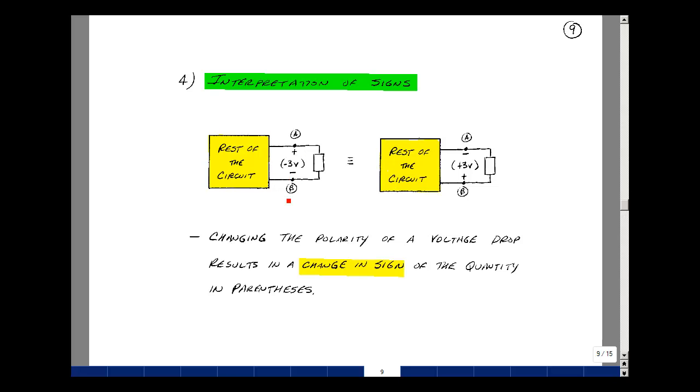If you flip the polarity here, and I'm going to put the plus sign here and the minus sign here, what results is the change in the sign and the quantity. So our minus 3 becomes a minus, a minus, or a plus 3 volts.